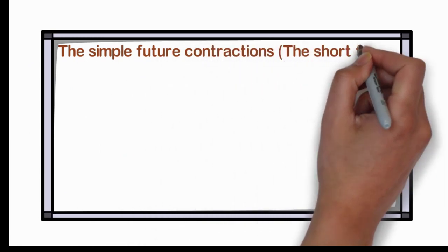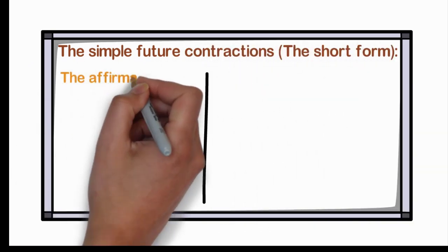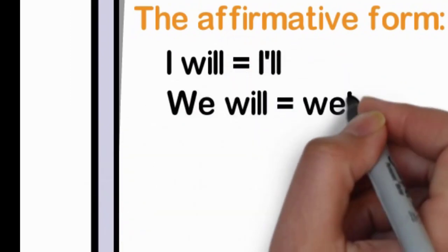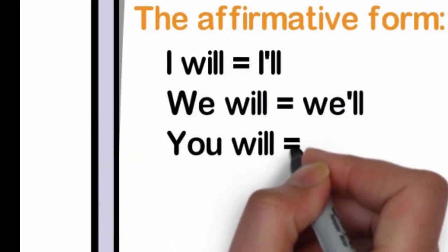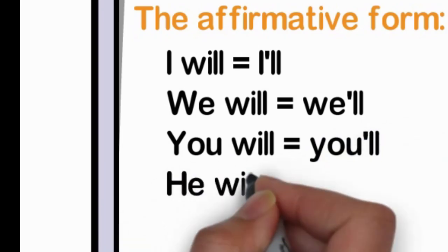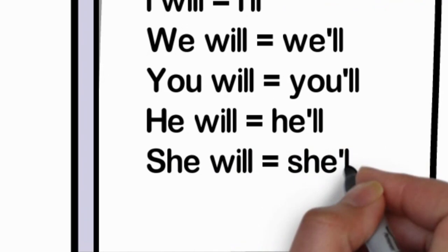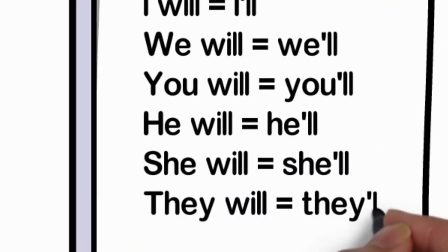The simple future contraction is the short form. The affirmative form: I will becomes I'll, we will becomes we'll, you will becomes you'll, he will becomes he'll, she will becomes she'll, they will becomes they'll.